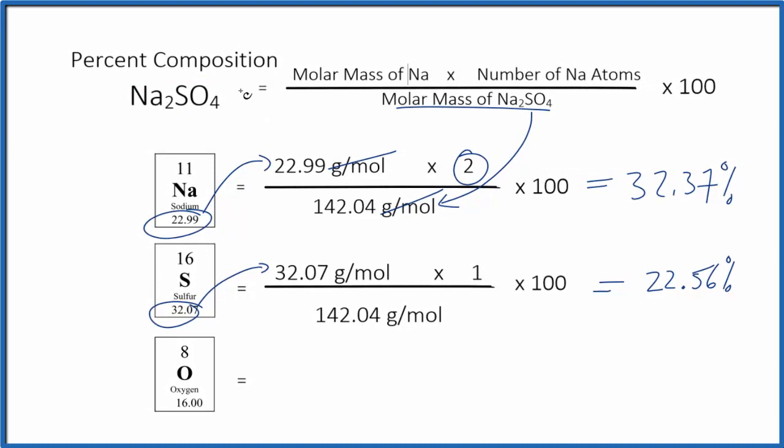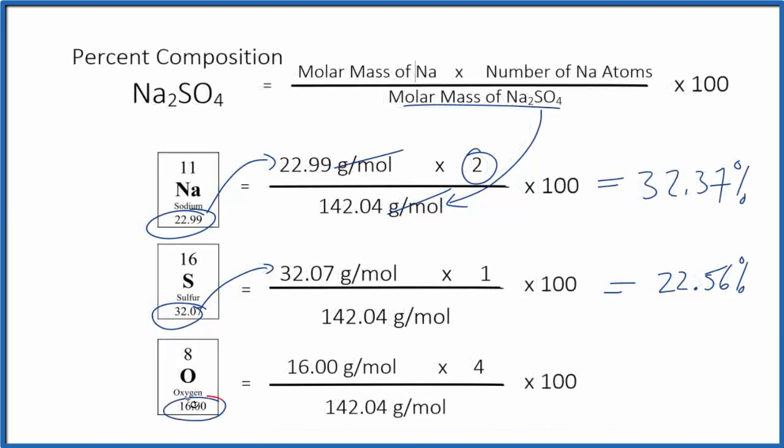Pause and find the percent composition by mass of the oxygen in Na₂SO₄. So we've got 16 right here, and we multiply that by 4 because there are 4 oxygen atoms. So 16.00 times 4, get that number, divide by the molar mass, times 100. We get 45.06, and that's the percent of the oxygen in Na₂SO₄.